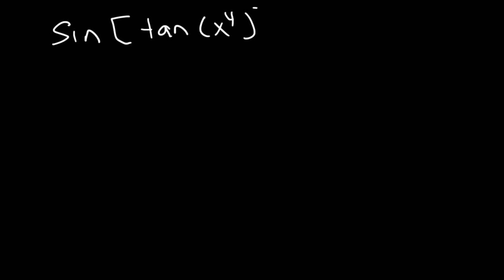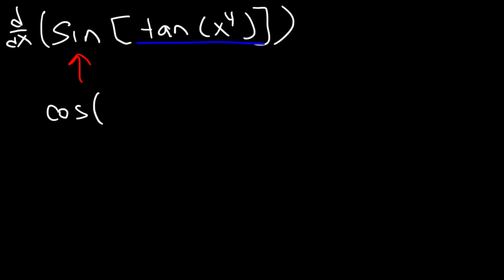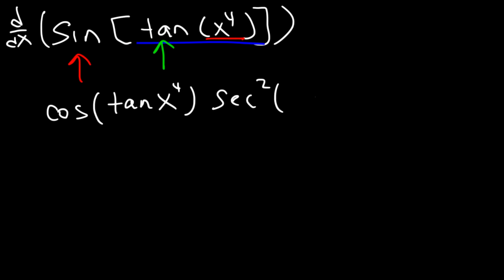Now what if we have a trig function inside another trig function? We need to differentiate the outside function, sine — the derivative of sine is cosine. Everything inside of sine is going to be the stuff inside of cosine, so that's tangent x to the 4th. Now let's move on to tangent — the derivative of tangent is secant squared, and the stuff inside of tangent becomes the argument of secant squared, so that's x to the 4th. Then the derivative of x to the 4th is 4x cubed. And so that's the answer.